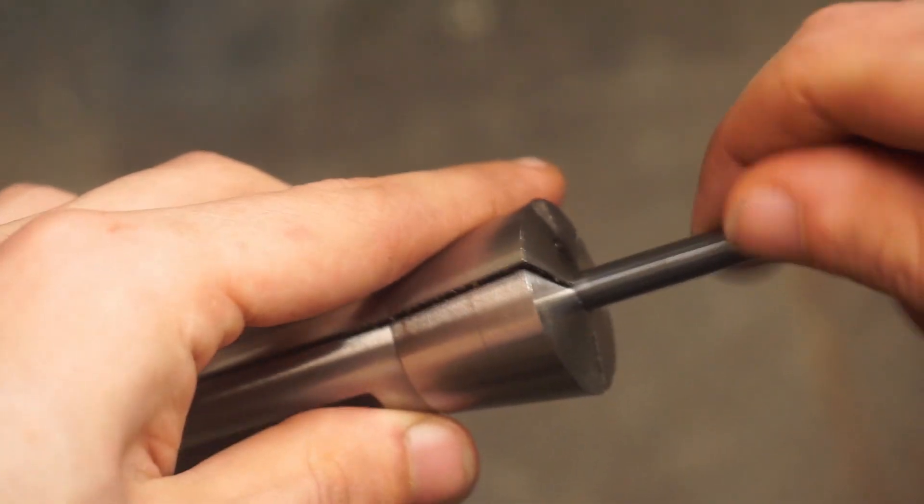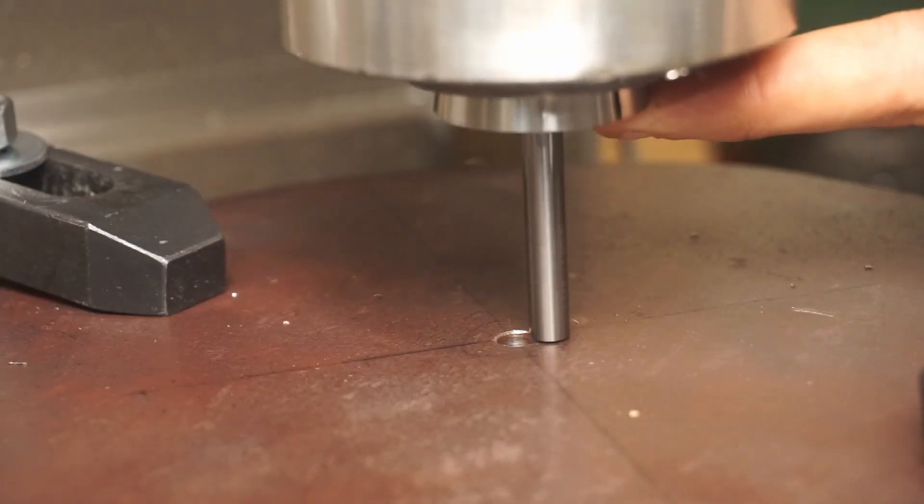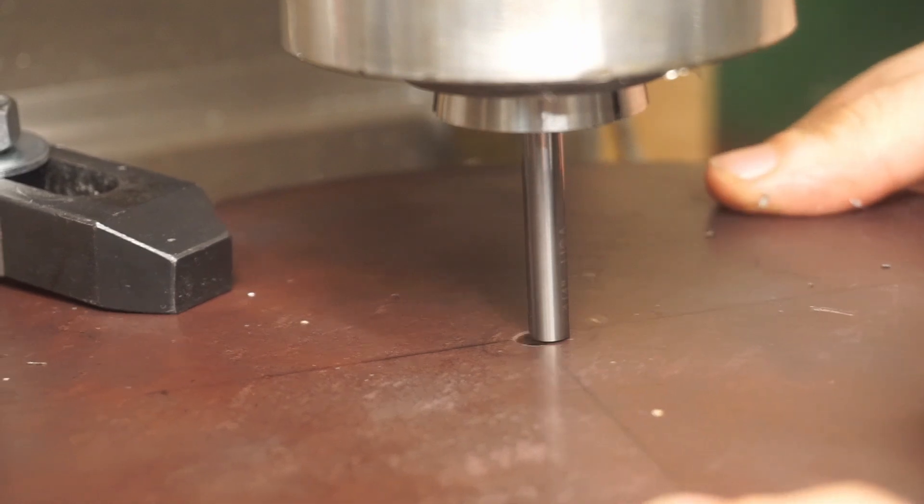I grabbed a quarter-inch collet for my mill, and a quarter-inch end mill. Carefully, I put the end mill into the collet backwards. I could now install this into my mill, and position the hole in the piece coaxially with the mill head.